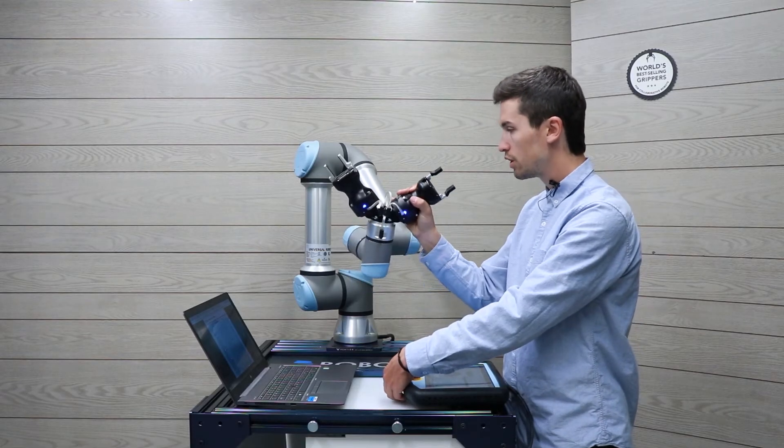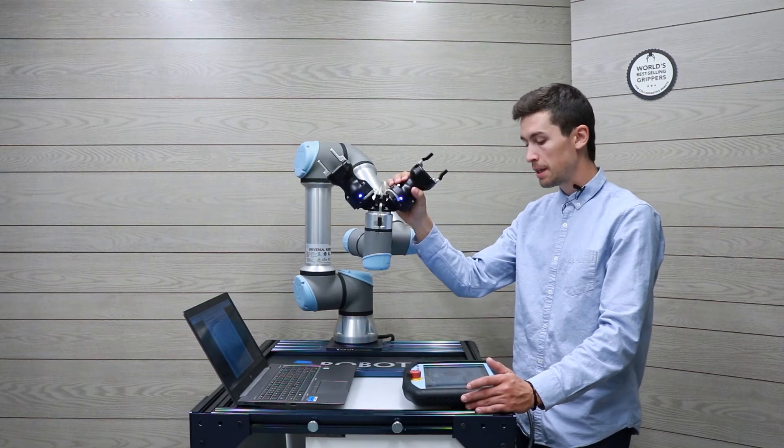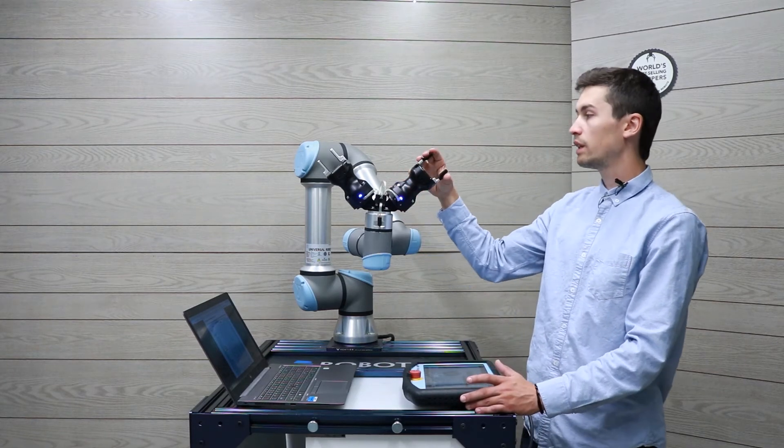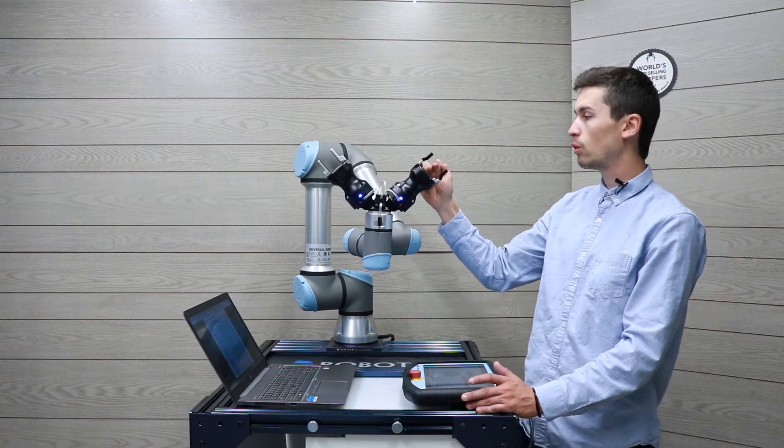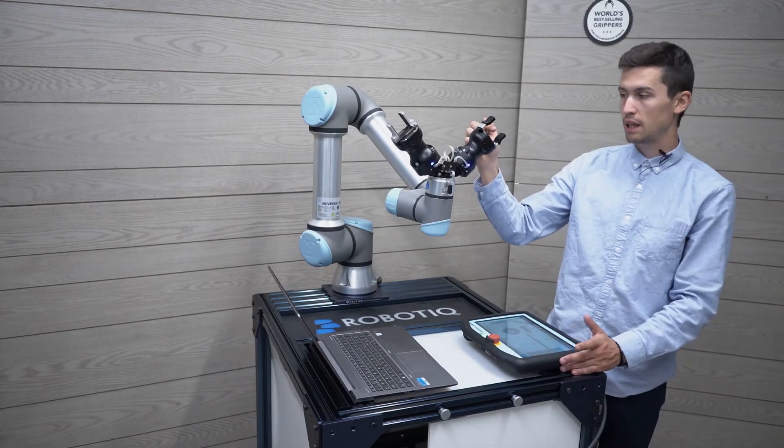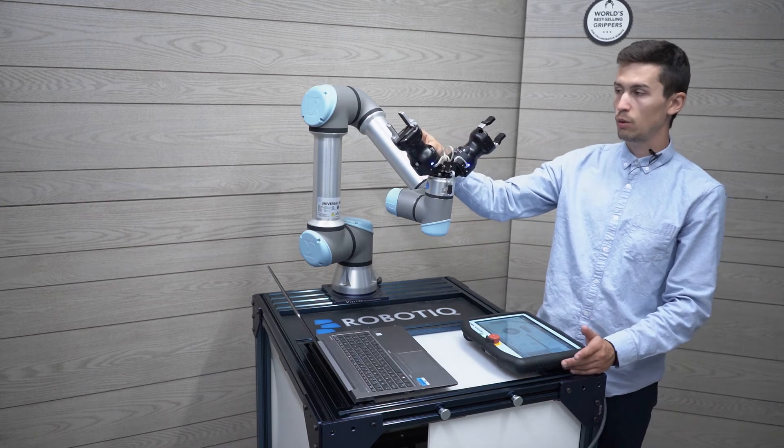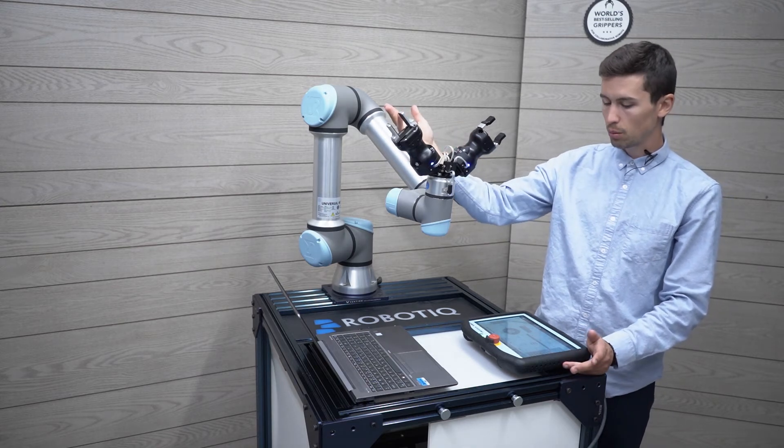So now what we're going to do is set the tool center point. The tool center point is the point where you want to grasp any type of object. In that situation we will have two center points.